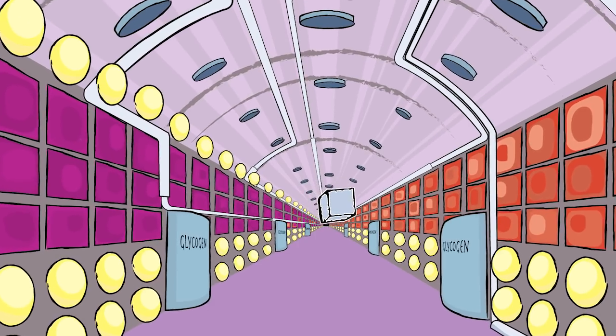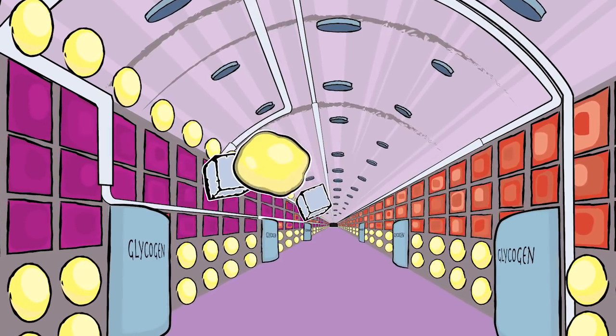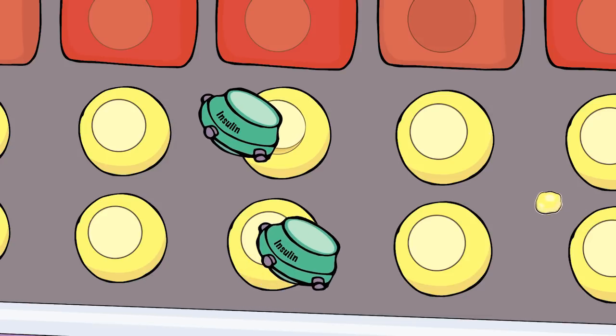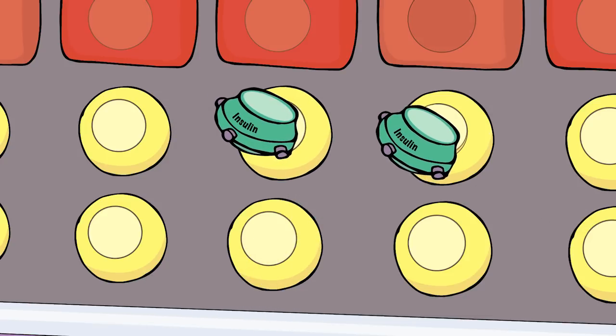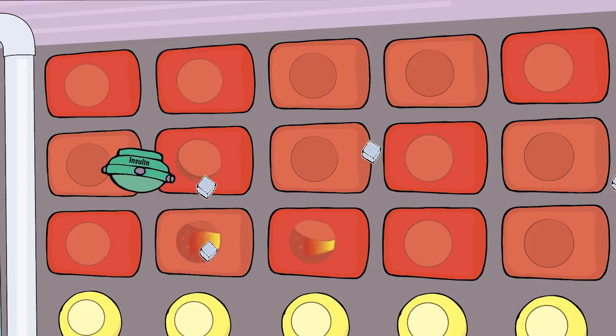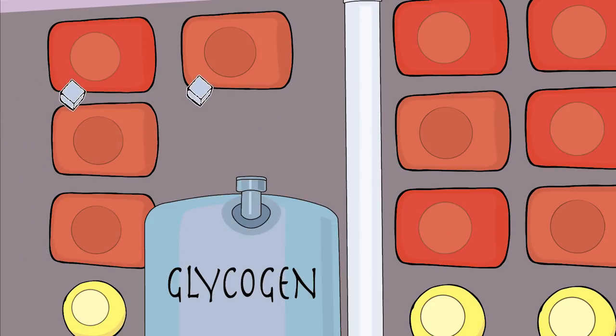The Nautilus has lots of fuel tanks and they're spread out all over the ship. Some of the tanks store sugar and some store fat. Those are the ship's two main fuels. But to avoid damaging the entire system, the Nautilus has to burn the right mix of fuels at the right time.